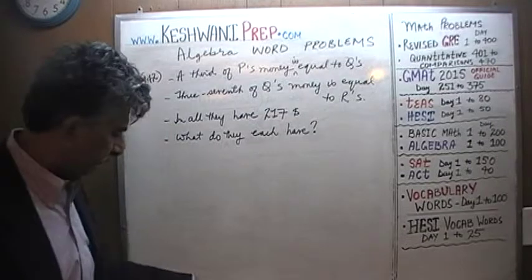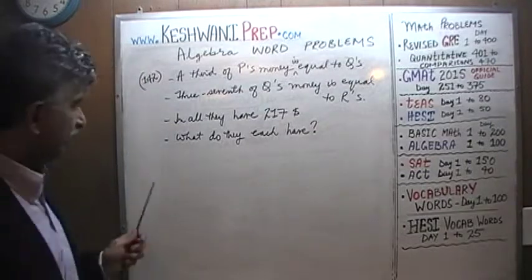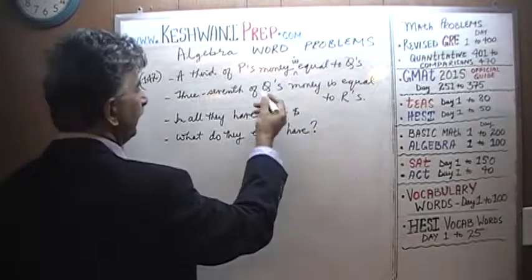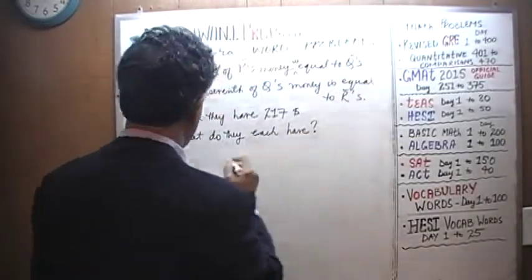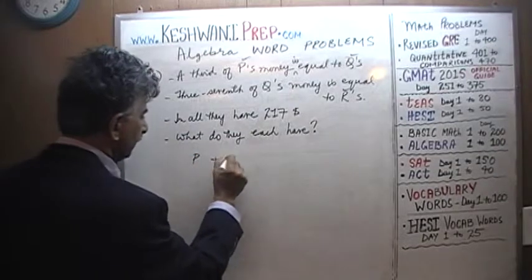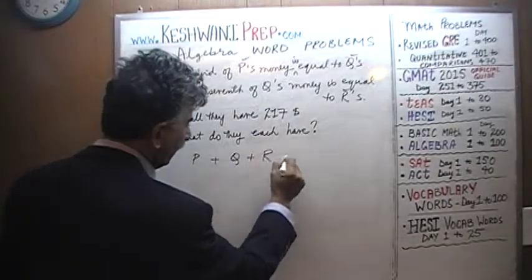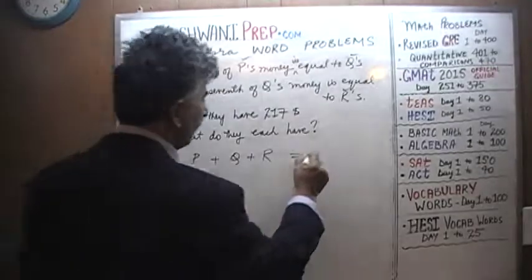In all, three of these people P, Q, and R have $217. What do they each have? Very simple, very straightforward question. Let's do it together.